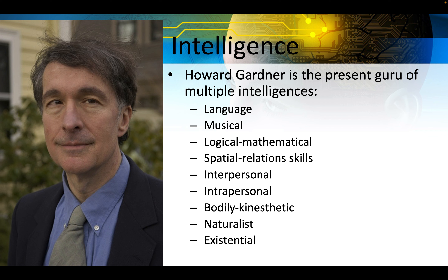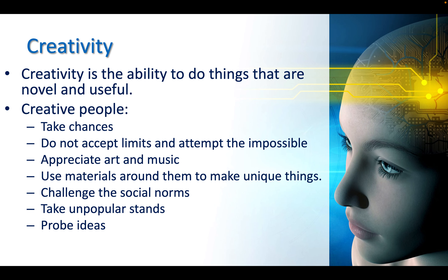Howard Gardner is the present guru of multiple intelligences. The types of intelligences he has identified include: language, musical intelligence, logical-mathematical intelligence, spatial relations skills, interpersonal intelligence, intrapersonal intelligence, bodily-kinesthetic intelligence, naturalist intelligence, and existential intelligence.